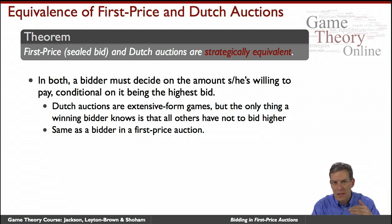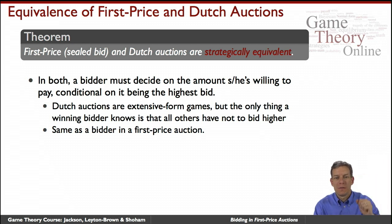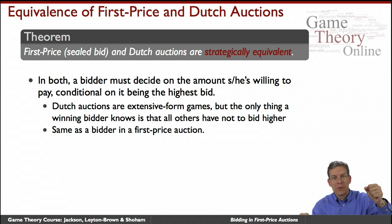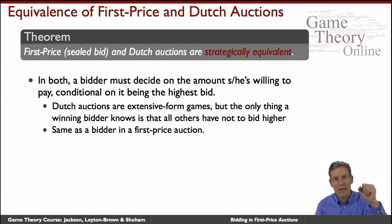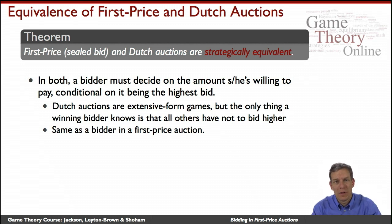Dutch auctions are an extensive form: the price starts at a very high level, drops down, and we keep going until somebody grabs it. Once you grab it, all you know is you grabbed it at some price and everyone else is still below you. So beforehand, I could just state a price and say: if nobody's grabbed it at this price, this is what I'm going to bid — conditional on me being the highest.